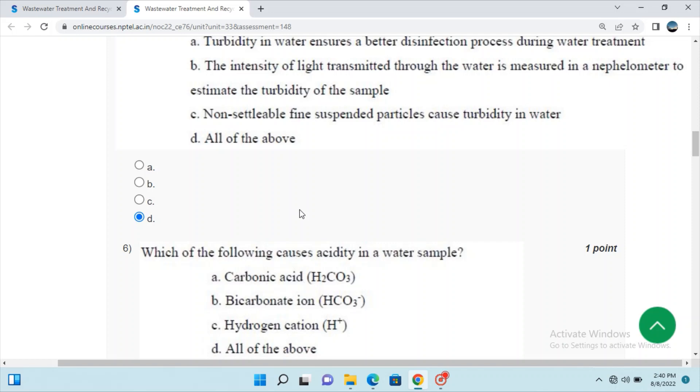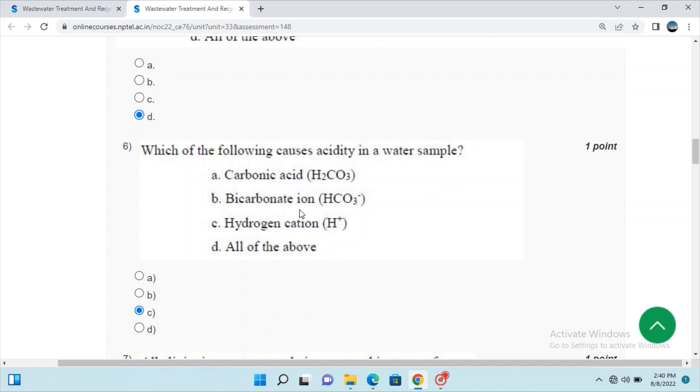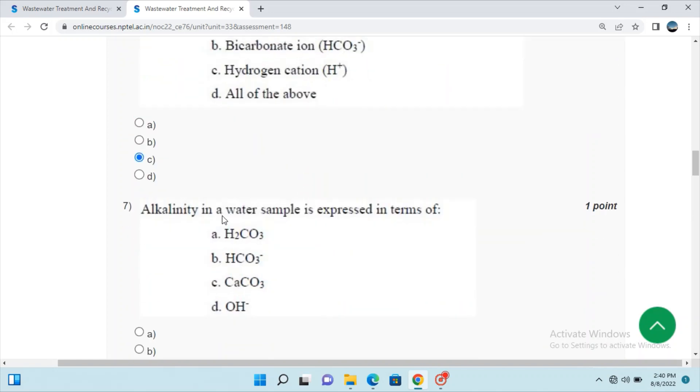All of the above. Question 5: Which of the following causes acidity in a water sample? Hydrogen cation, carbonic acid, and bicarbonate. Iron does not give acidity.